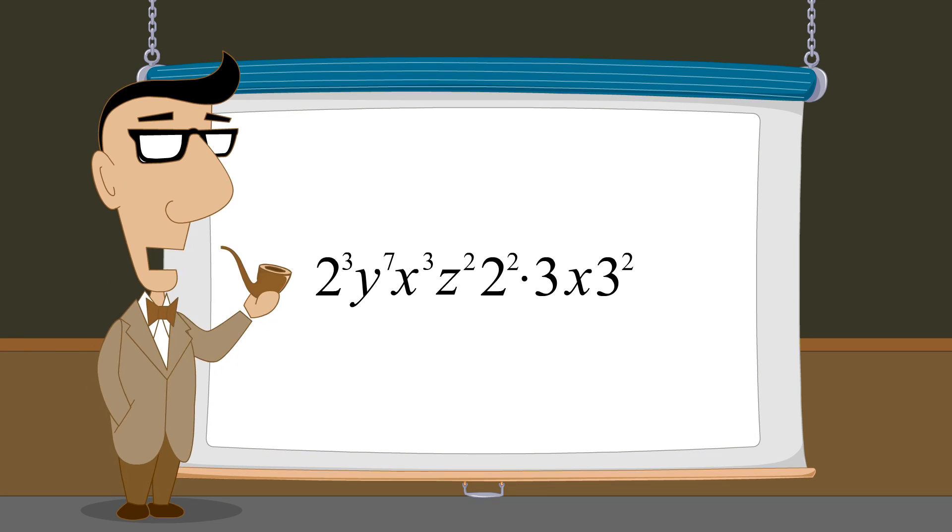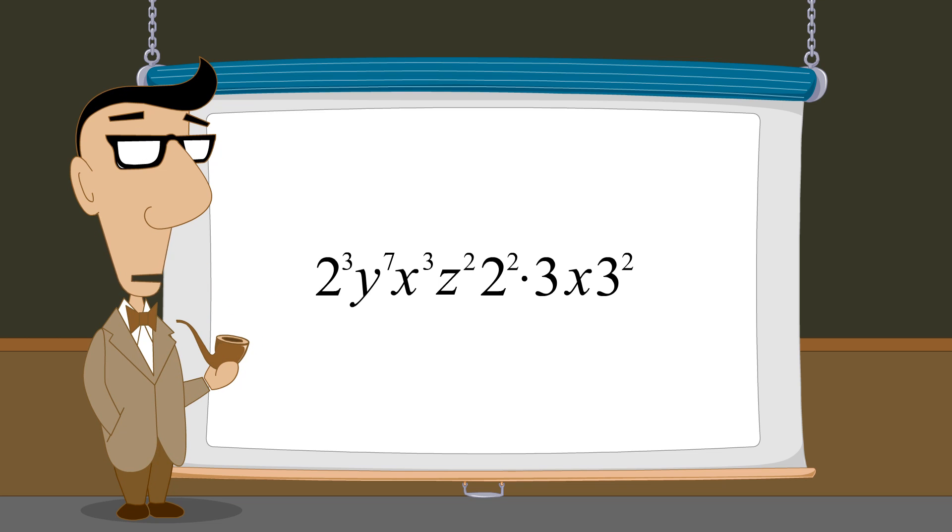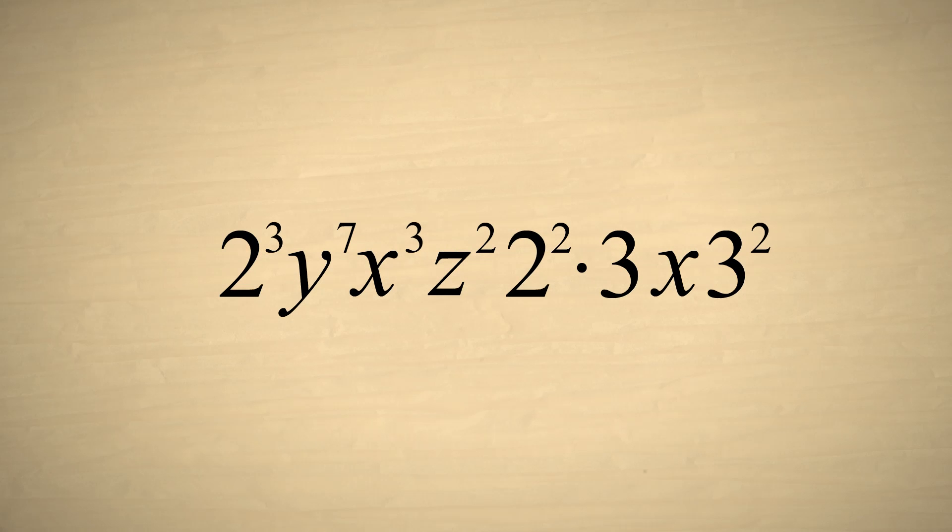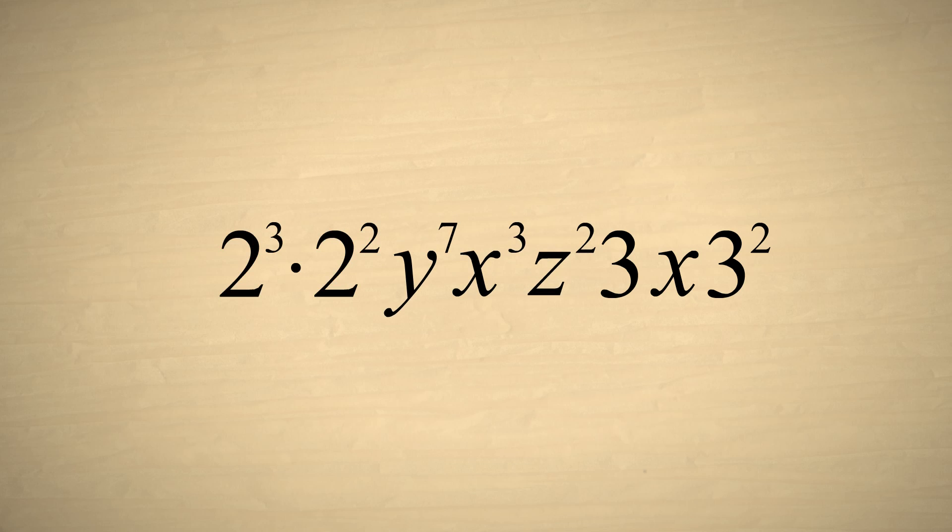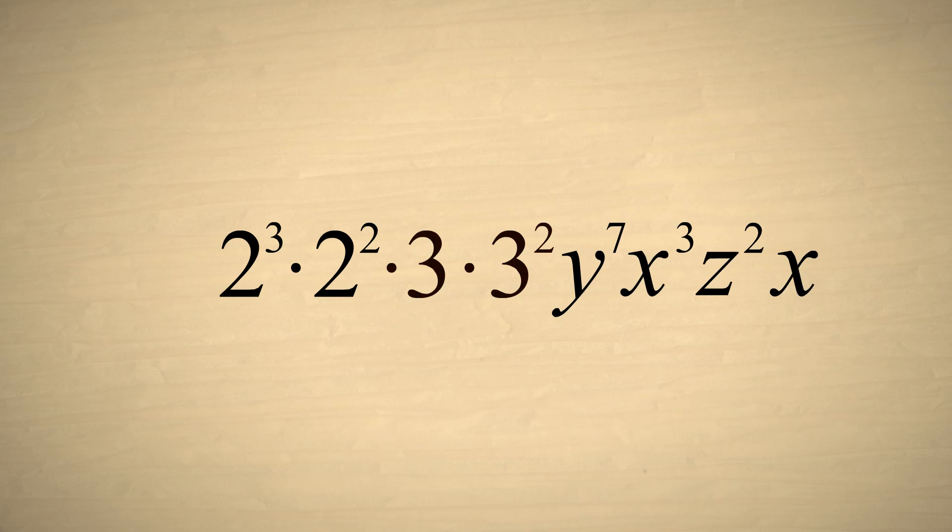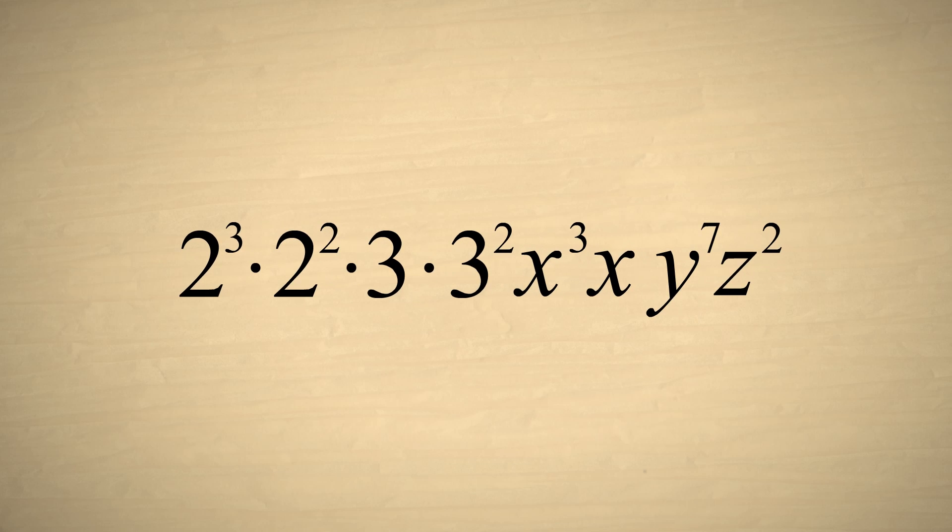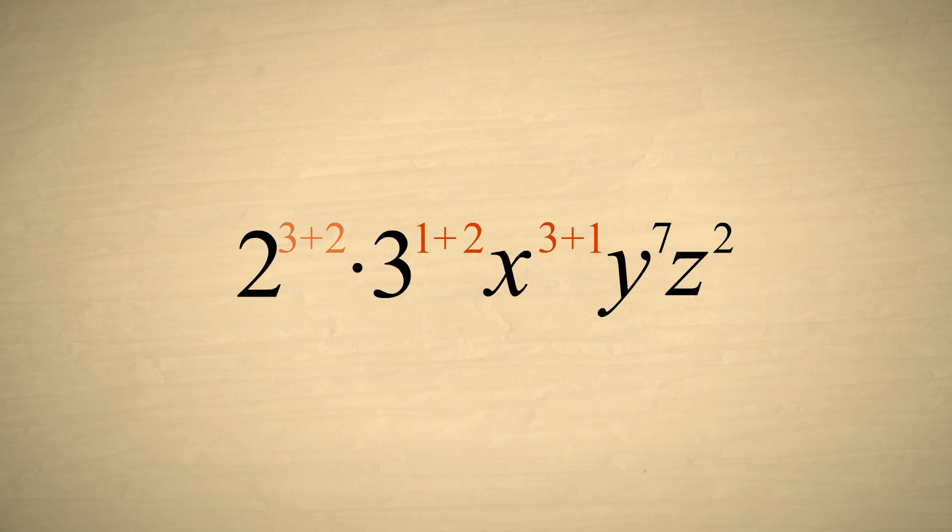In our last example, we will simplify a complicated-looking exponential expression with several variables and numbers. A good place to start is to group like bases together. Let's move all the twos to the front, followed by the threes, then the x's, y's, and z's. Now add an exponent of one to any term that has no exponent and combine exponents of terms which have the same base. This gives us two to the fifth times three cubed times x to the fourth times y to the seventh times z squared.